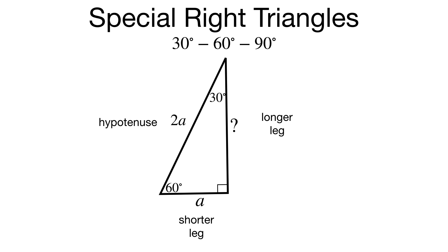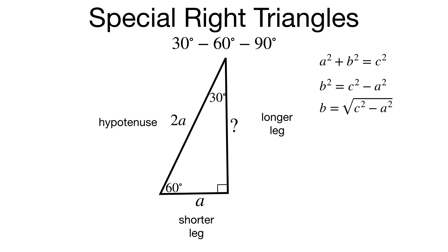We know two sides of this right triangle, so to find that third side we can use the Pythagorean theorem. Let's call that missing side B. Since A squared plus B squared equals C squared, let's solve for B. Subtract A squared from both sides to get B squared equals C squared minus A squared. Then take the square root of both sides: B equals the square root of C squared minus A squared. C is the hypotenuse and A is the other leg, so substituting in 2A and A, we get the square root of the quantity 2A squared minus A squared.